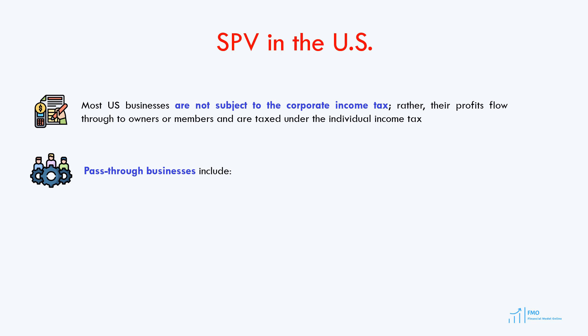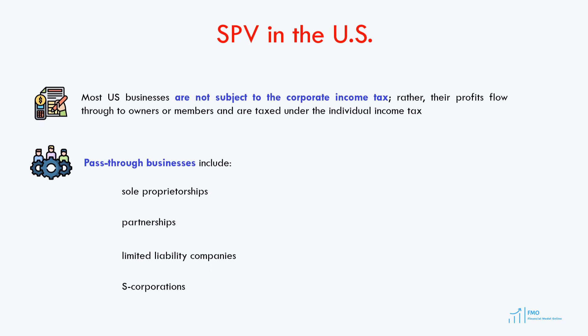Pass-through entities include such enterprises as a sole proprietorship, partnerships, limited liability companies, and S-corporations. These businesses do not pay taxes; rather, their owners or investors pay taxes.